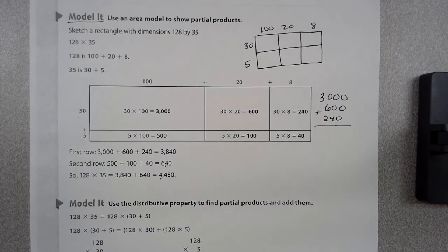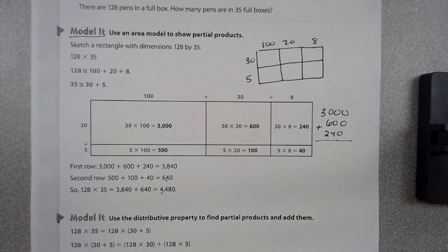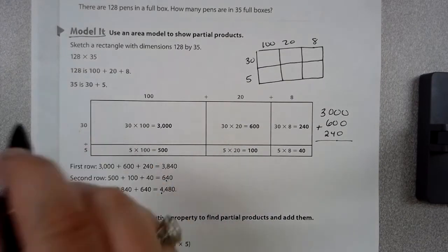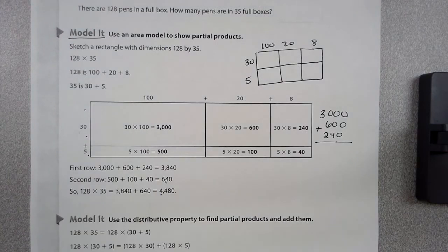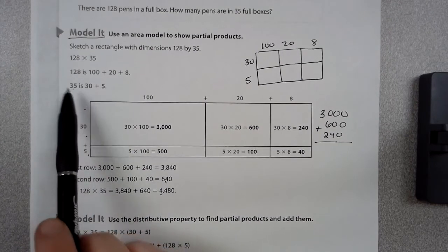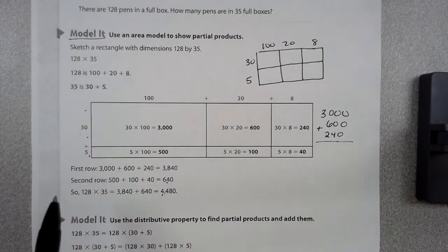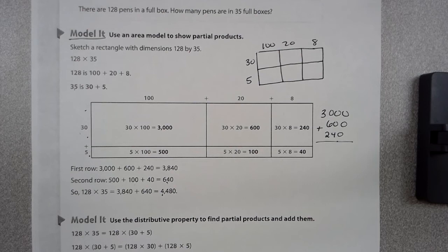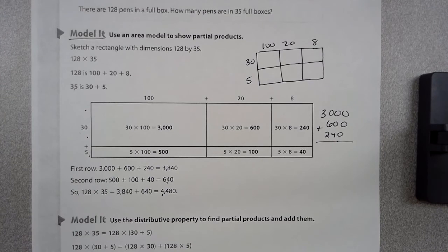Number four says, would the product change if 30 and 5 on the left side of the model were changed to 20, 10, and 5? So instead of having a three by two, you would have a three by three, with one being 20, 10, and 5. Would that change anything? Think about it. The numbers have to add up because 30 plus 5 is 35. 100 plus 20 plus 8 equals 128.